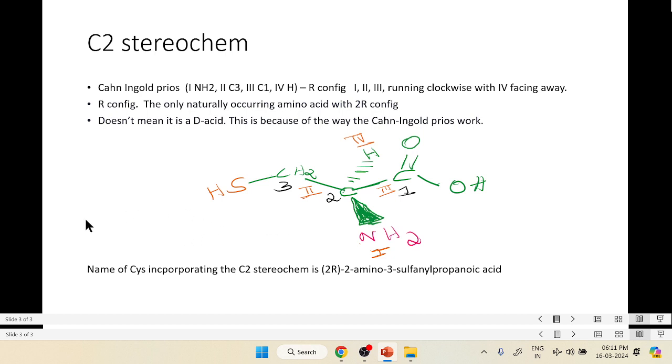If we include the stereochemistry of C2, the name of cysteine will be 2R-2-amino-3-sulfanyl propanoic acid. Thank you.